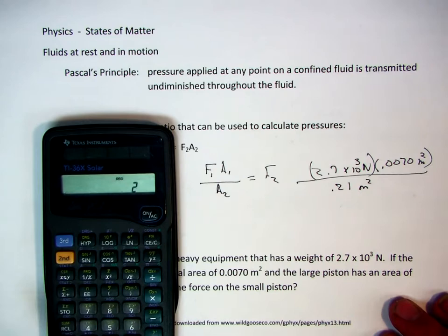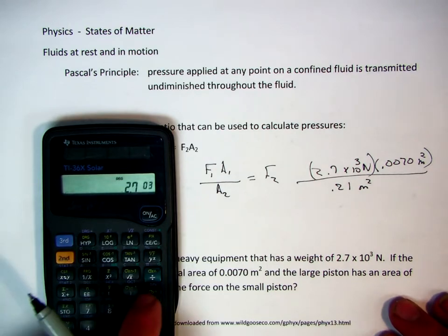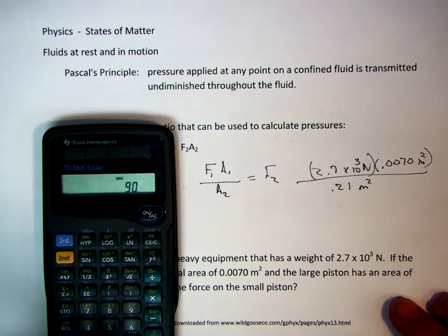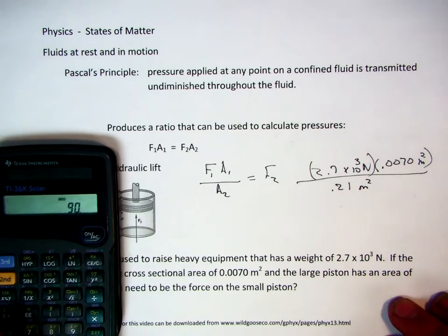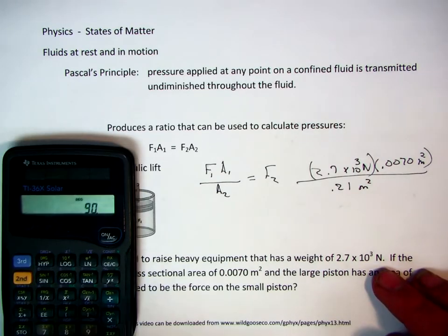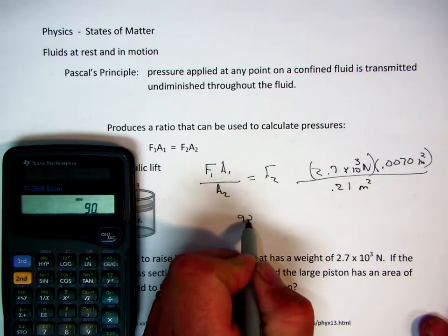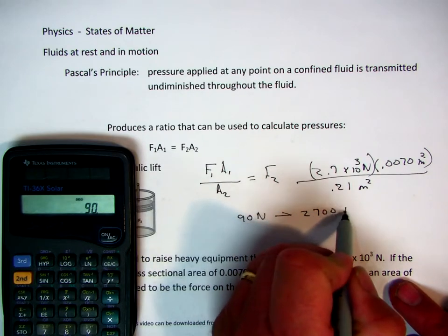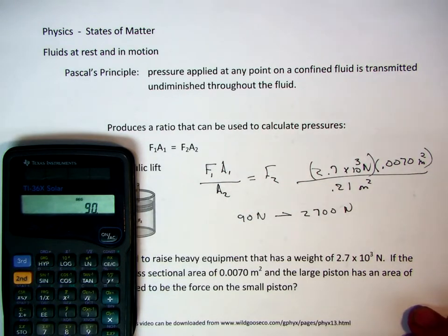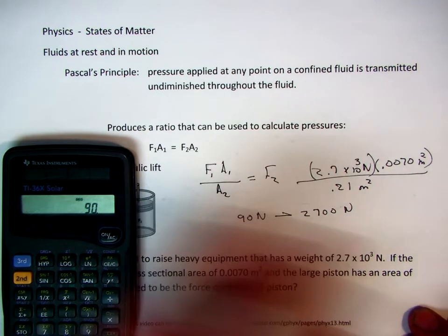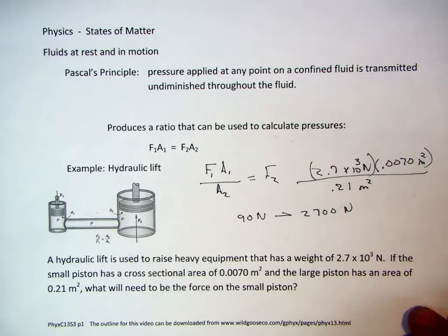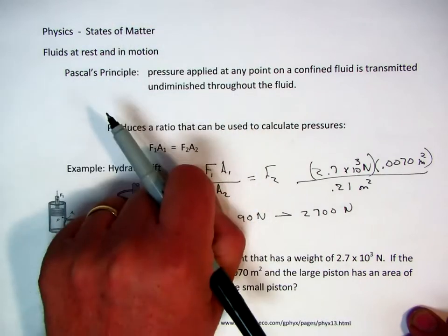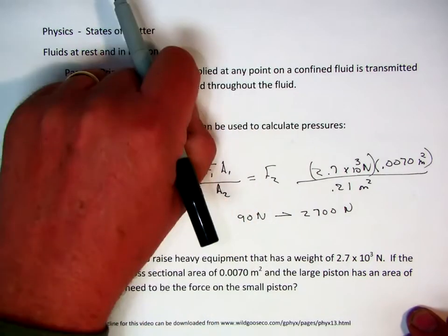So let's go ahead and do the calculations on that. Very simple calculation. 2.7 exponent 3 times 0.0070 divided by 0.21 gives us 90. So what we put in as 90 newtons will transmit out to 2,700 newtons because of the area. So we put a lot less into it to be able to lift. So it's not unreasonable for us to take a hydraulic jack under the side of our car and lift up the entire car.